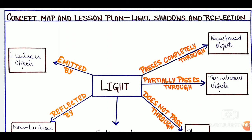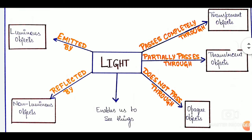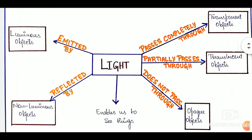As usual, at first we have our concept map. Here we can see that with the help of arrows we have depicted the relationship between concepts, sub-concepts, and sub-sub-concepts. On the arrows we have written the phrases or linking phrases which depict the relationships.